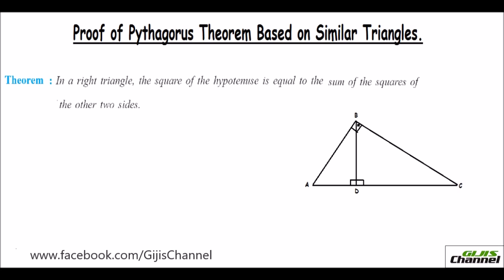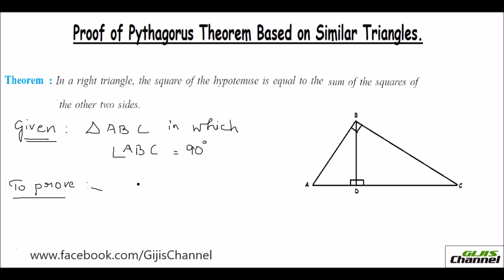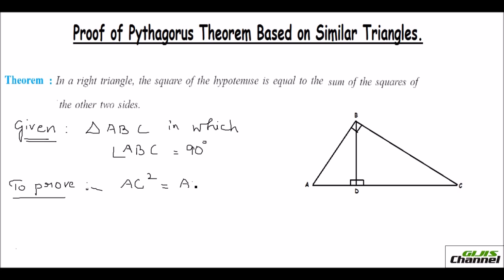Here I have drawn a right angle triangle ABC. First, let us write what is given. Triangle ABC in which angle ABC is equal to 90 degrees. Now we need to prove that the hypotenuse squared — that is AC squared — is equal to the sum of the squares of the other two sides, AB and BC.